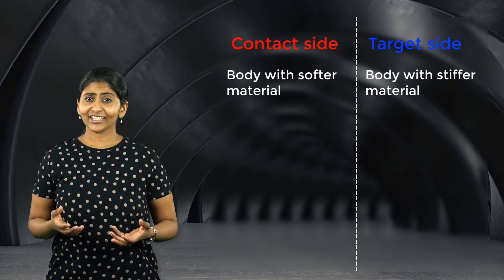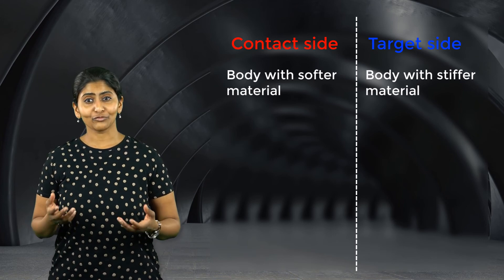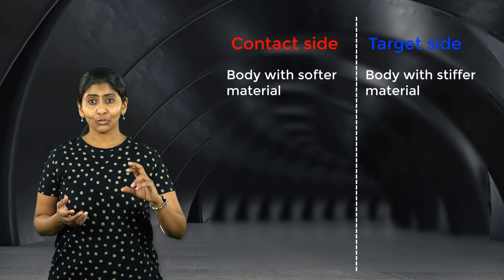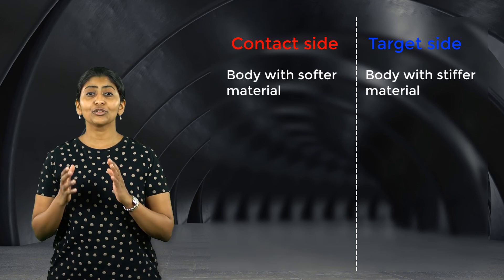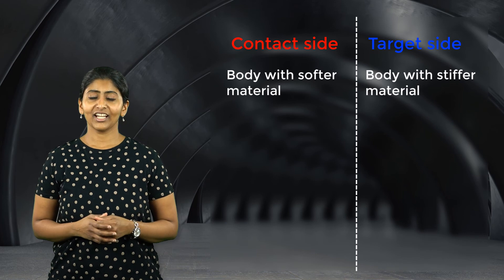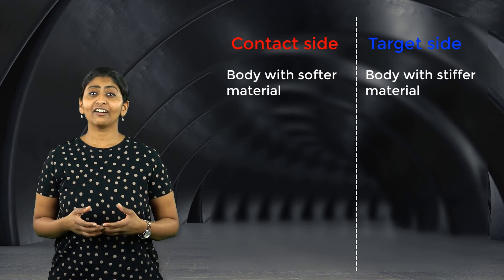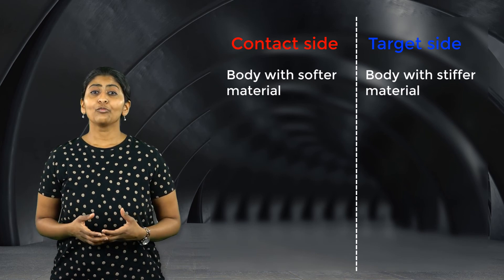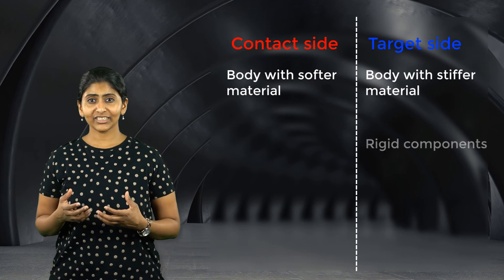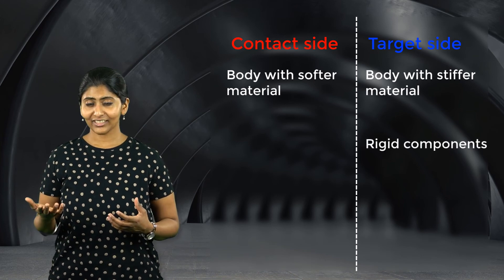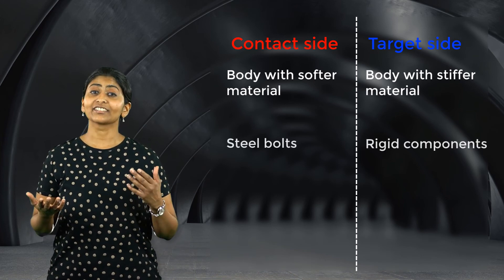We saw another example in the Section 1 workshop where steel bolts were used to connect two rigid parts together. Since rigid bodies have the highest stiffness, we modeled the rigid components as the target side and the steel bolts as the contact side.